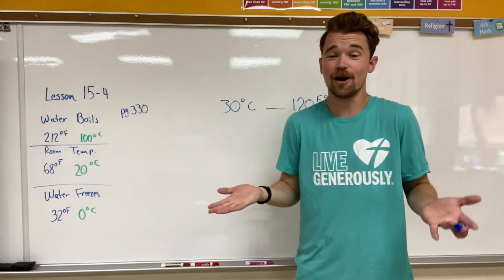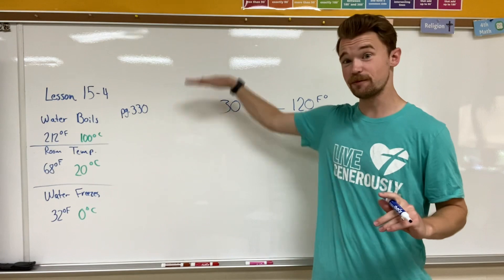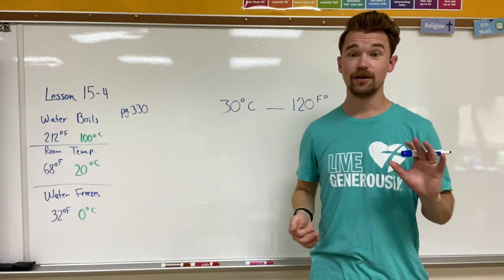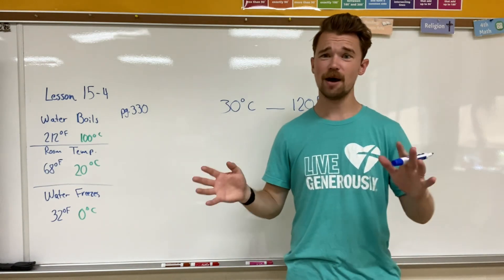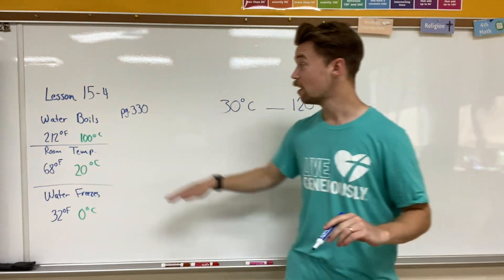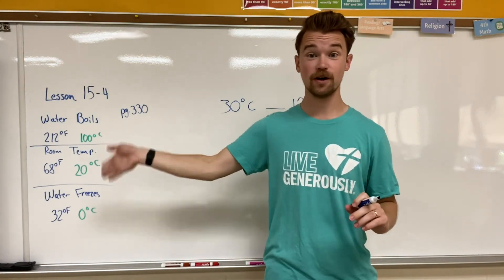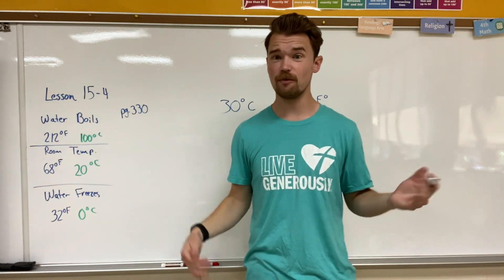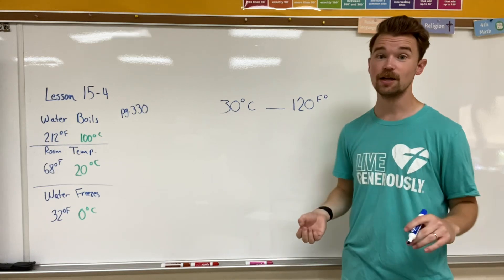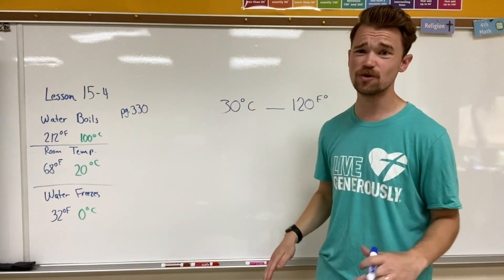A thermometer is a device that uses liquid on the inside that raises and lowers based on the temperature of its environment or atmosphere. You're going to do the thermometer reading in your book more so than what I can draw on the board. Page 330 has an excellent drawing of a thermometer that has both Fahrenheit on the left side and Celsius on the other side, so you can accurately compare degrees in both scales.